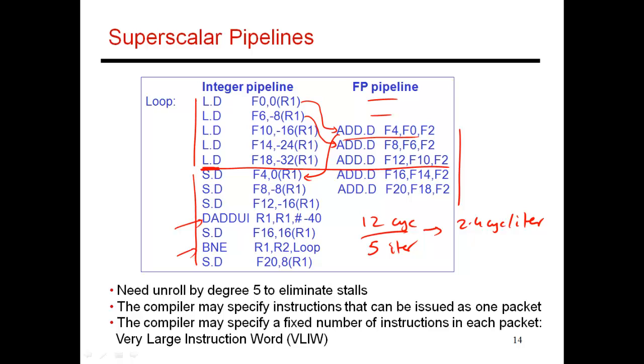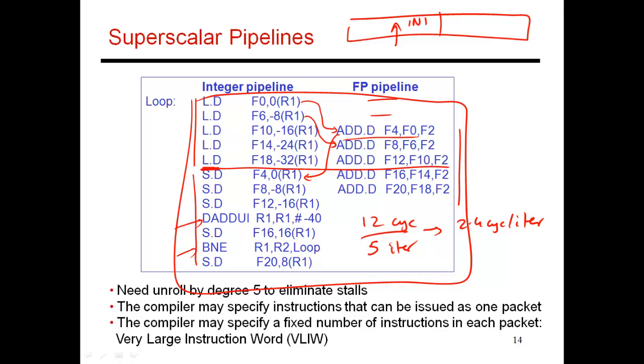The next question that this leads to is, how does the compiler specify what needs to be executed every single cycle? I have this list of assembly instructions. How exactly is it being specified in my binary? One option is to specify a very large instruction word. Previously, I said that each instruction takes four bytes. Now I have an eight-byte instruction where the first four bytes specifies the instruction that should go to the integer pipeline, and the next four bytes specifies what should go to my floating point pipeline.